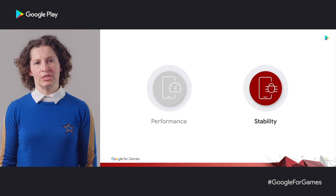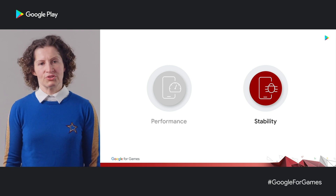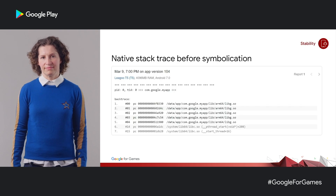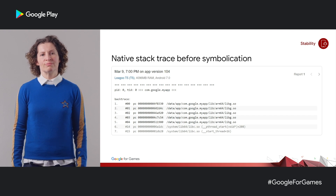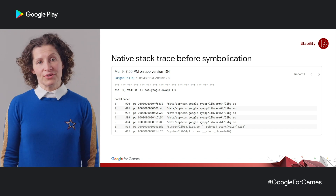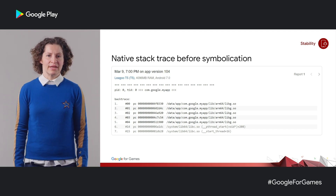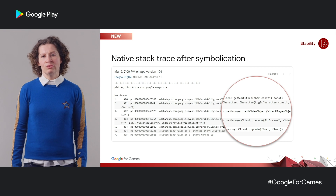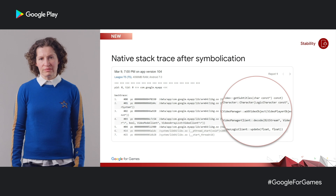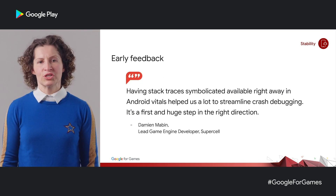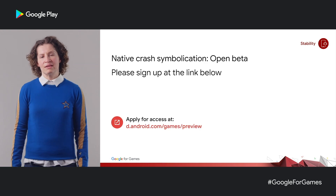In the console today, we support deobfuscation of Java stack traces, but the same is not true for native code. If your function names have been stripped from your code, your stack traces currently look like this — you don't see your function names, which means you're missing the information that helps you understand where this crash occurred. This makes it really hard to debug. So the good news is we're addressing this: if you give us your native debug symbols, we will symbolicate your crashes. You will get more accurate crash clusters and more information to debug your stability issues. You can provide this information when uploading your APK or at any point afterwards. This is available from today in open beta.